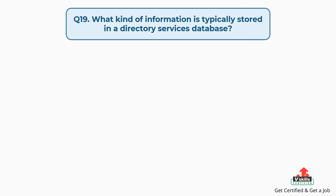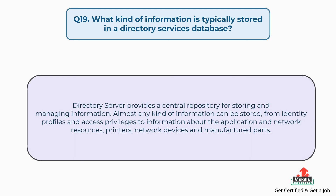Question number nineteen: what kind of information is typically stored in a directory services database? A directory server provides a central repository for storing and managing information. Almost any kind of information can be stored, from identity profiles and access privileges to information about applications and network resources, printers, network devices, and manufactured parts.